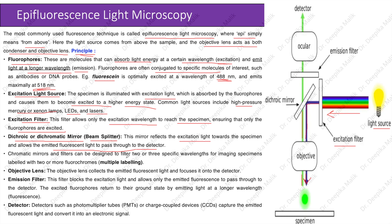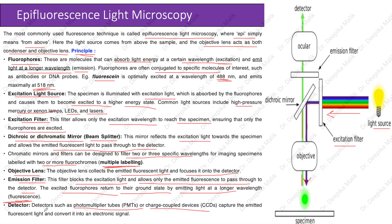Chromatic mirrors and excitation filters can be designed to filter two or three specific wavelengths for imaging specimens labeled with two or more fluorochromes — this is known as multiple labeling. The objective lens collects the emitted fluorescent light and focuses it onto the detector. The emission filter blocks the excitation light and allows only the emitted fluorescence to pass through to the detector.